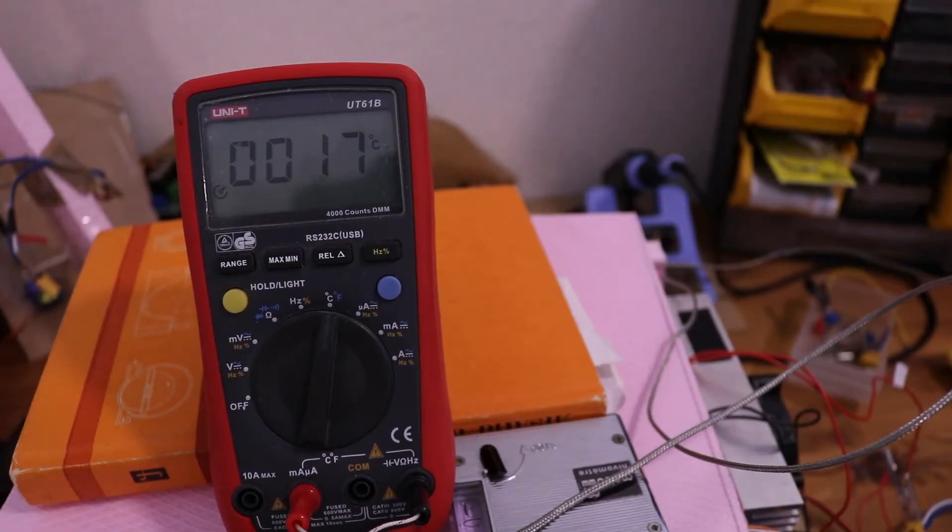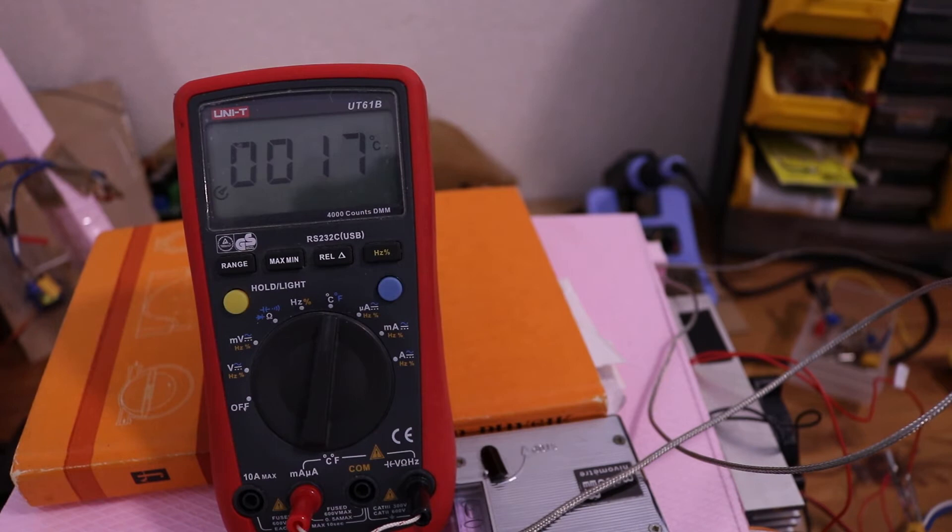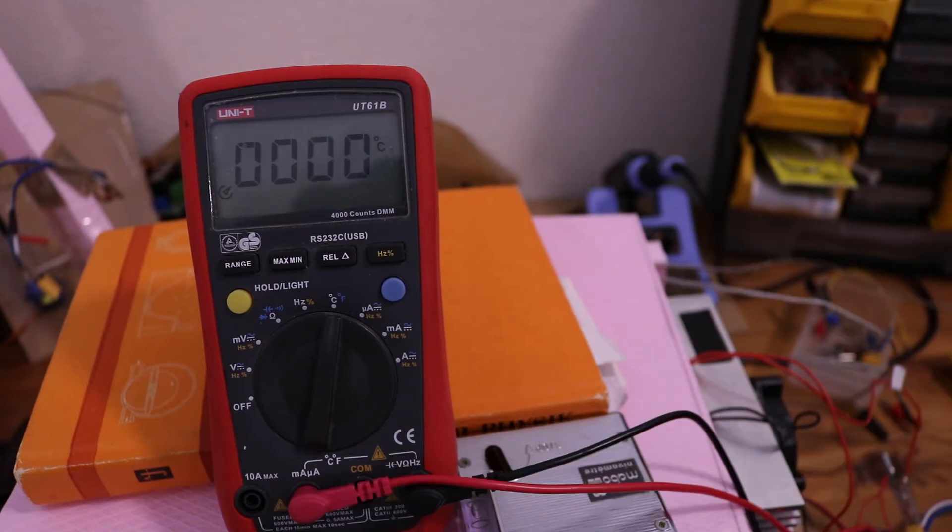Also the temperature sensors arrived. This is now the temperature inside of the box and I can switch to the second temperature sensor that is directly on the heat sink of the inside. The temperature on the inside is approximately one or zero degrees on the heat sink directly.